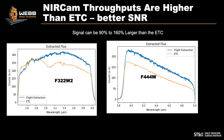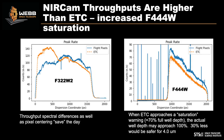Moving on to throughput performance of the grism time series: the good news is we get more photons than the exposure time calculator predicted, especially at longer wavelengths — about 90 to 160 percent larger than ETC calculations. That's good news for your signal-to-noise.